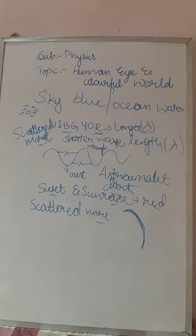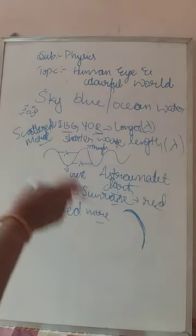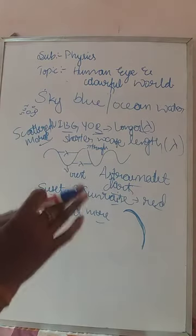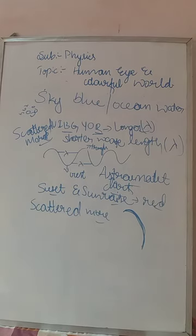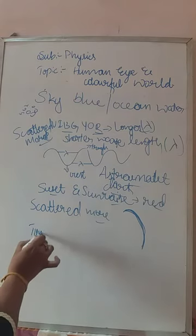If they ask why sunset or sunrise appears to be red, you should be ready to answer — both have the same reason: red color is more scattered due to atmospheric refraction. These are all natural examples for refraction. In examination, if they ask for examples of refraction, you can give: sky color is blue, ocean water is blue, sunset and sunrise appear red, and stars are twinkling.